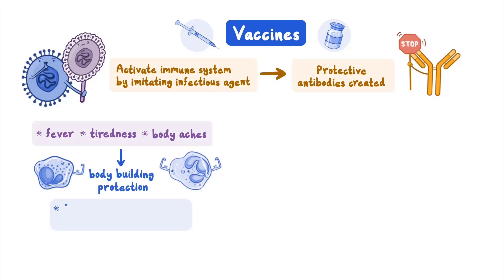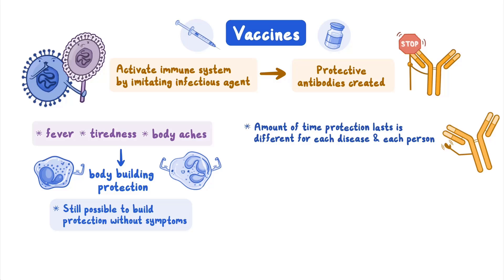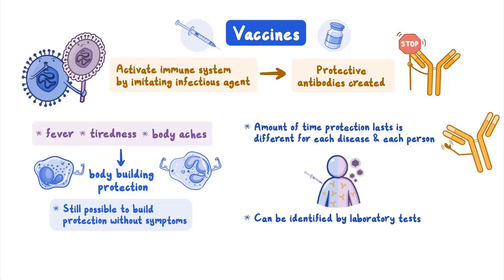It is also possible to still build protection from a vaccine even if you don't feel any symptoms — some people do not experience these symptoms but are still protected after being vaccinated. Antibodies can stick around to protect you from getting the same disease again, but the amount of time this protection lasts is different for each disease and each person. Laboratory tests can detect antibodies created within the body, whether they're produced after vaccination or when a person is actually infected with a virus, bacteria, or other agent.